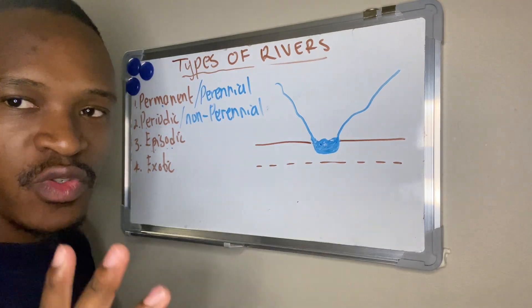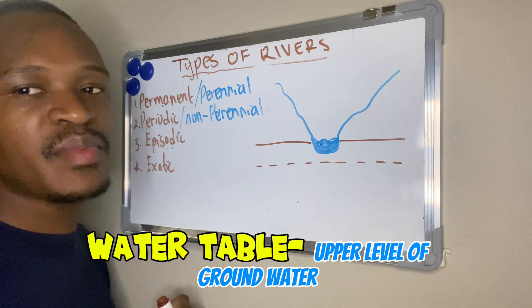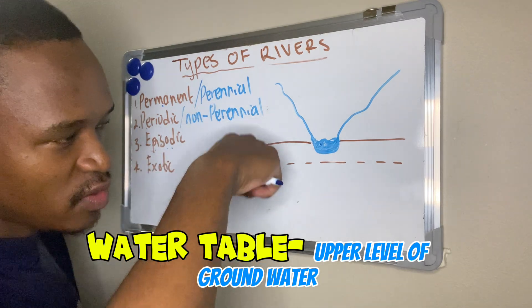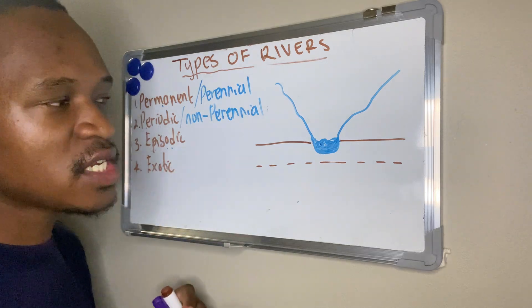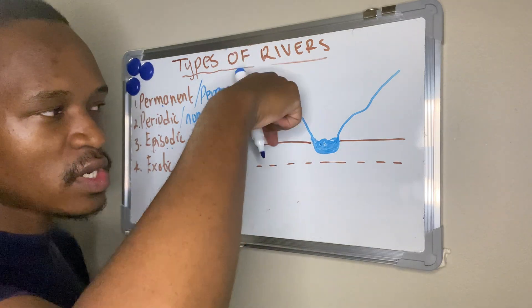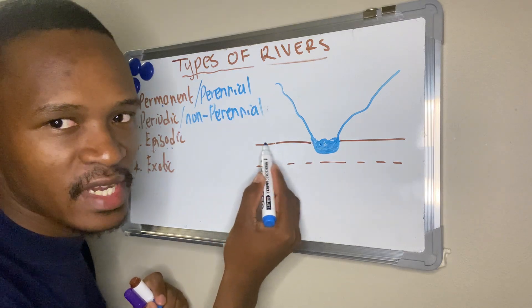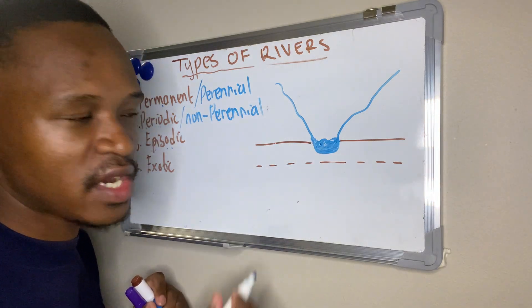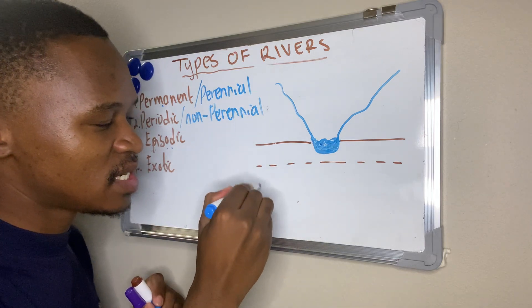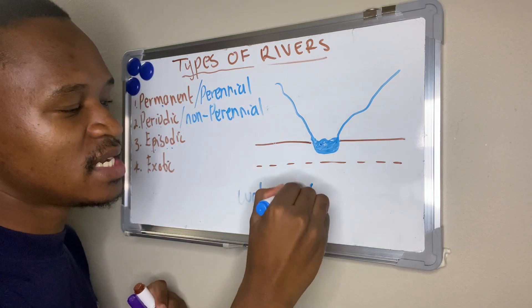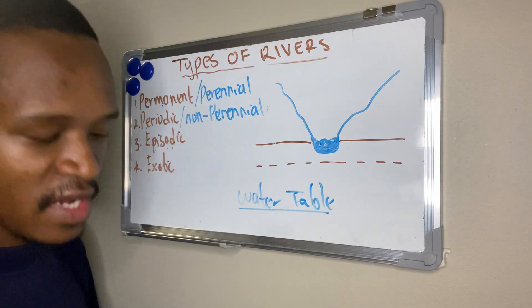I also want you to know what a water table is. A water table is the upper level of groundwater. Because of infiltration, we have groundwater — water below the ground. This brown line here is showing us the level of the groundwater, and the upper level of that groundwater is known as the water table.